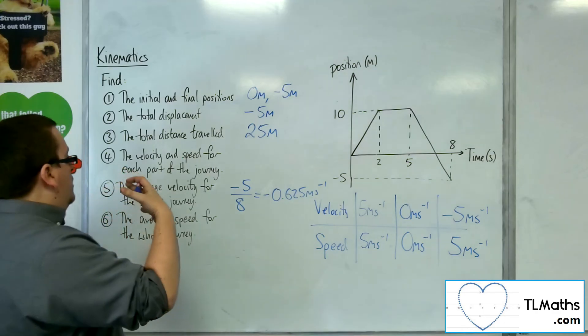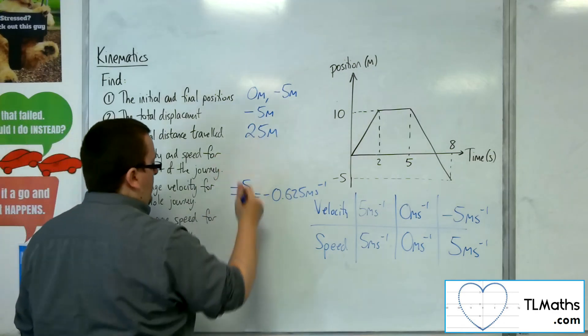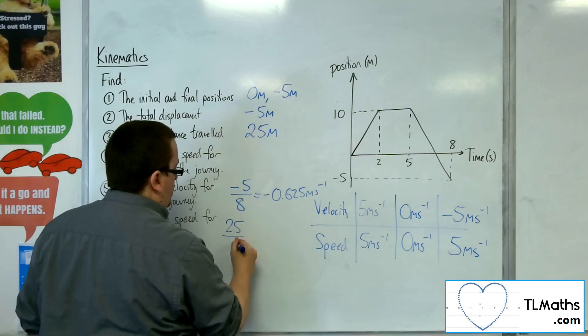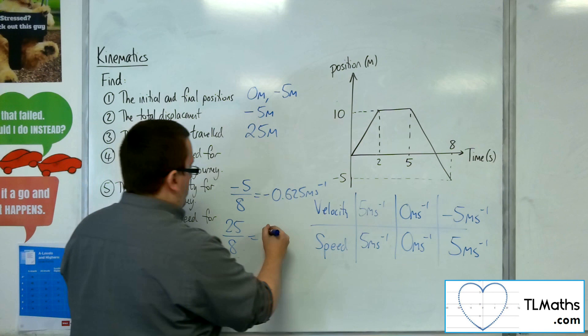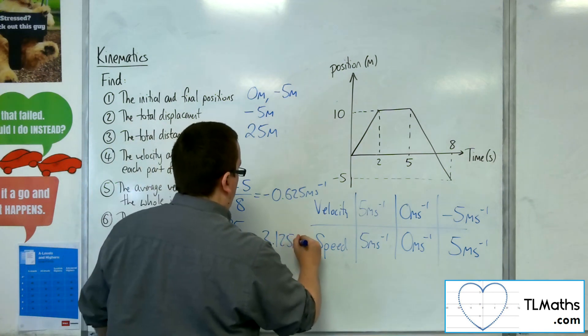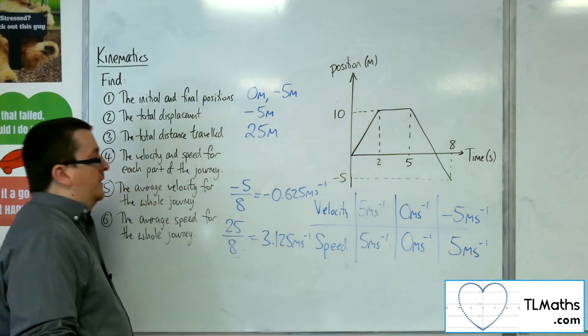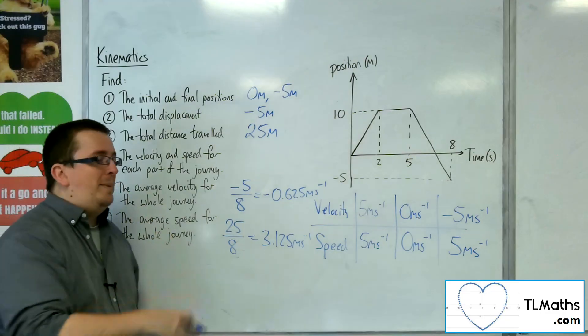The average speed is the total distance, 25 metres, divided by the total time. So 25 divided by 8 is 3.125 metres per second. So that's how you can see velocity and speed differing.